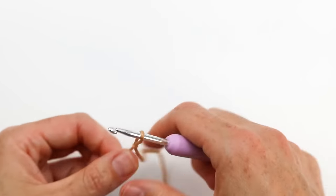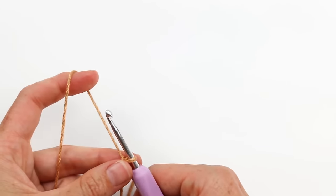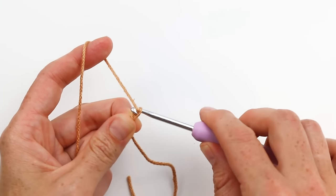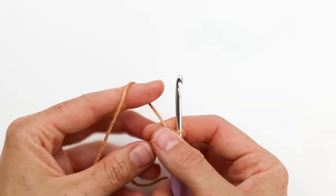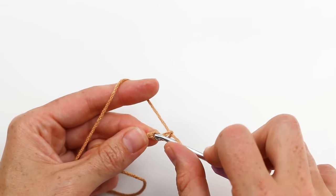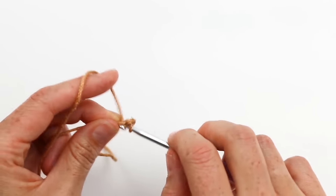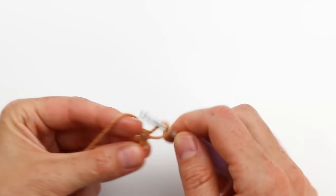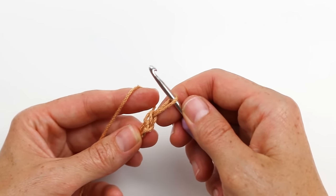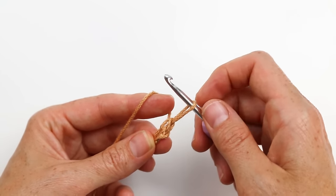So I'm starting with a slipknot on my hook and we're going to begin by chaining two. After we've chained two, we're going to work a single crochet into the second chain from the hook. And now that we've got that first single crochet...